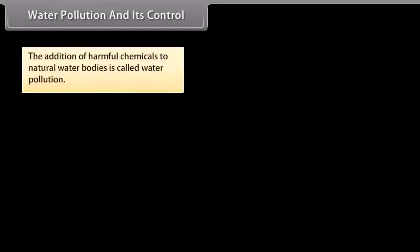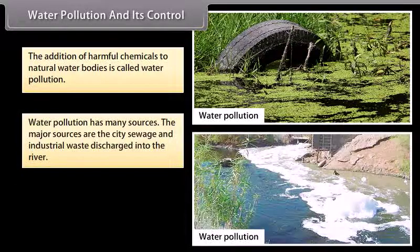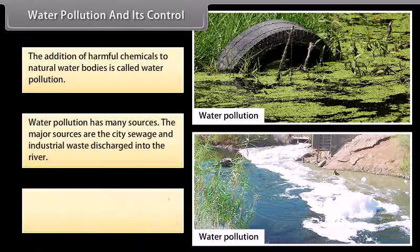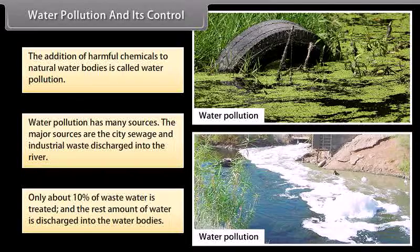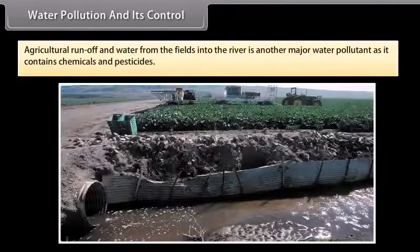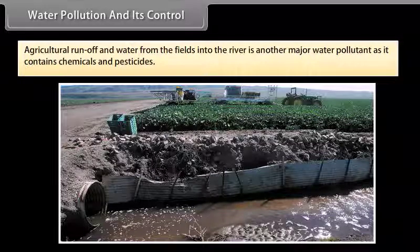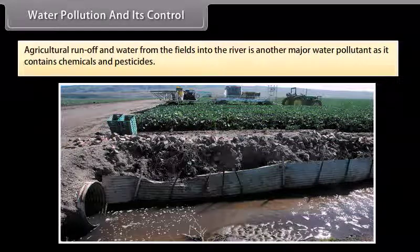Water pollution and its control. The addition of harmful chemicals to natural water bodies is called water pollution. Water pollution has many sources. The major sources are city sewage and industrial waste discharged into rivers. Only about 10% of waste water is treated; the rest is discharged into water bodies. Agricultural runoff from fields into rivers is another major water pollutant, as it contains chemicals and pesticides.